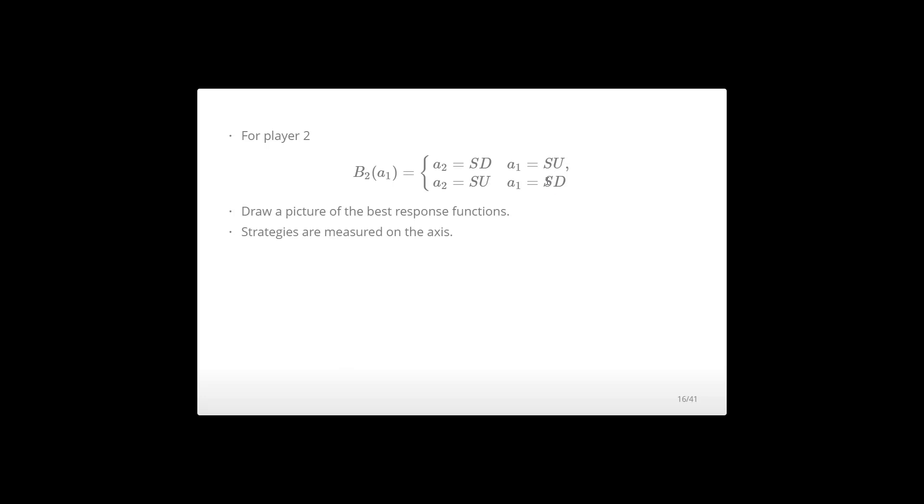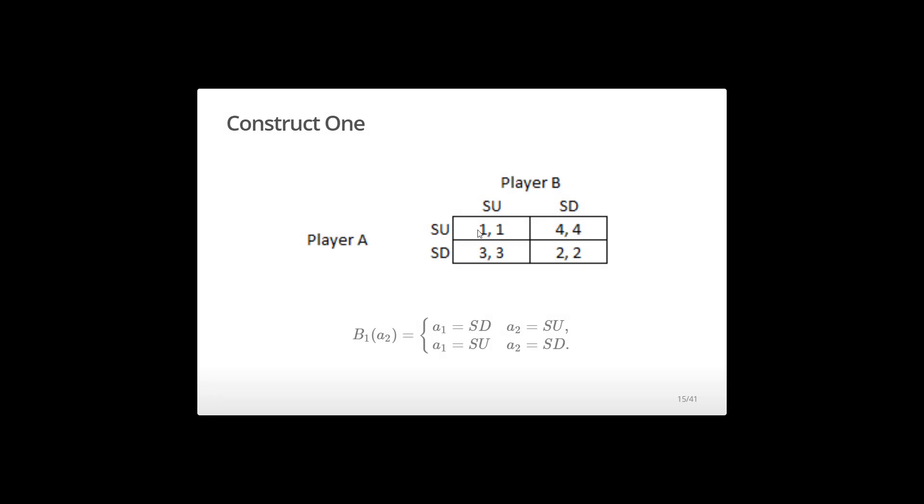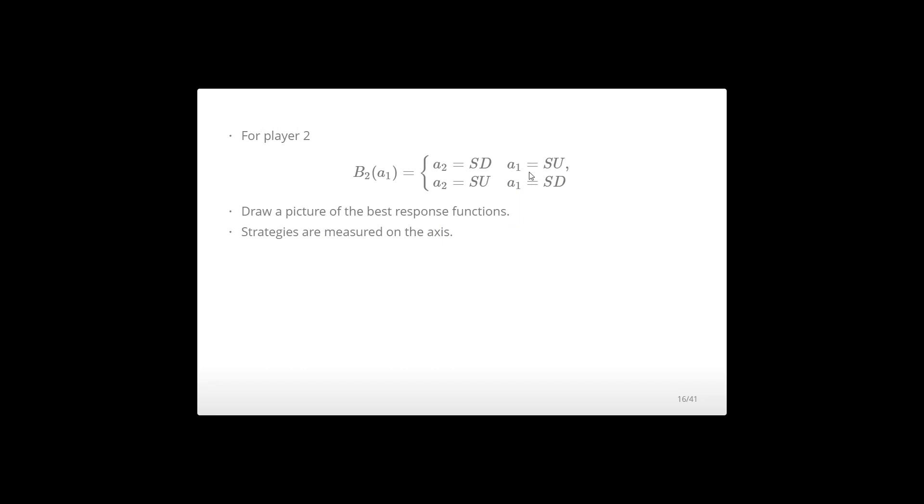Pay close attention to this. If player one chooses to speed up, essentially I am in this first row. And I am looking for the highest payoff for player B in this first row. I'm comparing this second one to this second four. Four is a bigger number. So I should respond to player one speeding up, if I'm player B, to me slowing down. So player one speeding up, I slow down.